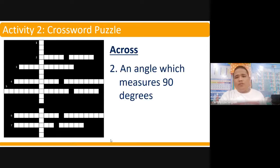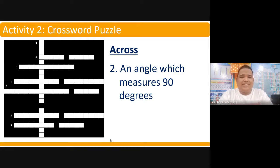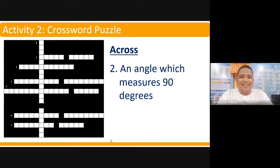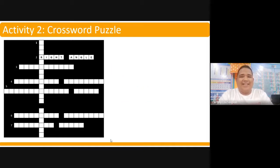For number one across: an angle which measures 90 degrees. When you were in Grade 7, fourth quarter, you already had an introduction to the different terms we use when talking about perpendicular and parallel lines. So an angle which measures 90 degrees — that is a right angle. That's correct.